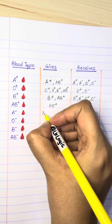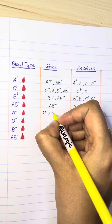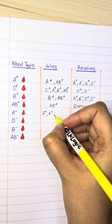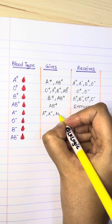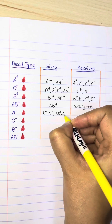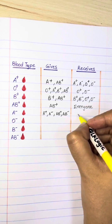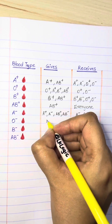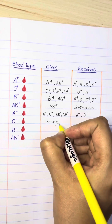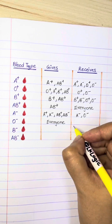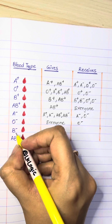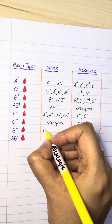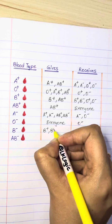A negative can give to A positive, A negative, AB positive, and AB negative, and can receive from A negative. O negative can donate to everyone and can receive from O negative only.